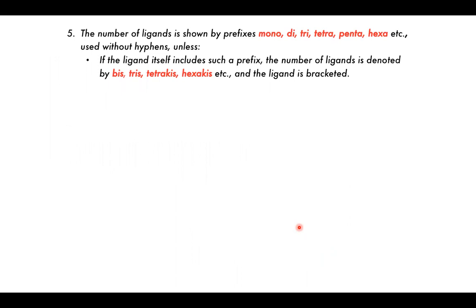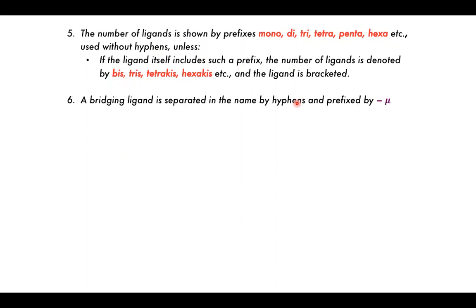The number of ligands is shown by the prefixes mono, di, tri, tetra, penta, hexa, and so on, used without hyphens unless a special case arises. If the ligand name itself already contains such a prefix, the number of ligands is instead denoted by bis, tris, tetrakis, hexakis, and the ligand is bracketed. For example, some ligands already have 'di' or 'tri' in their names, so it doesn't make sense to say 'tri-tri'. Instead we say 'tris(tri...)' or similar. A bridging ligand is separated in the name by hyphens and prefixed with mu. The oxidation state of the metal is usually indicated by a Roman numeral after the metal name.